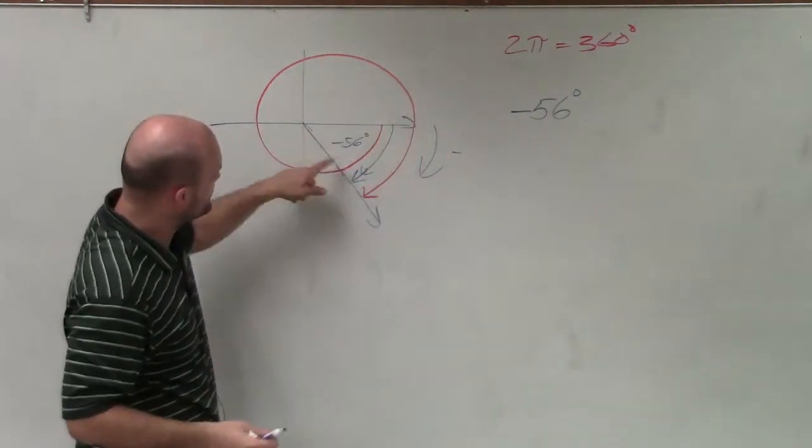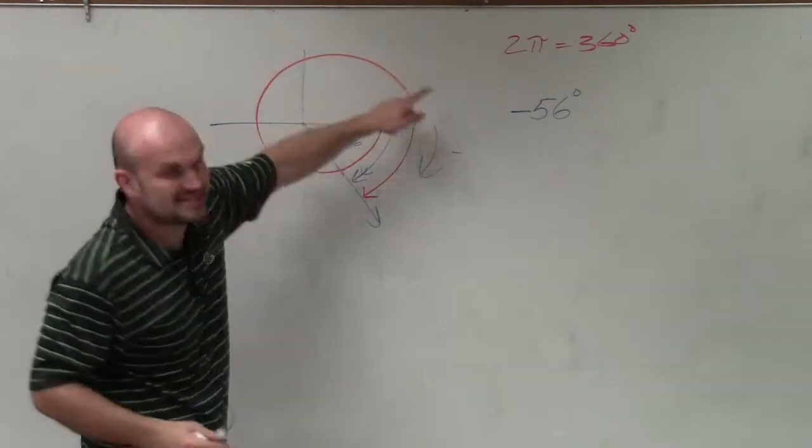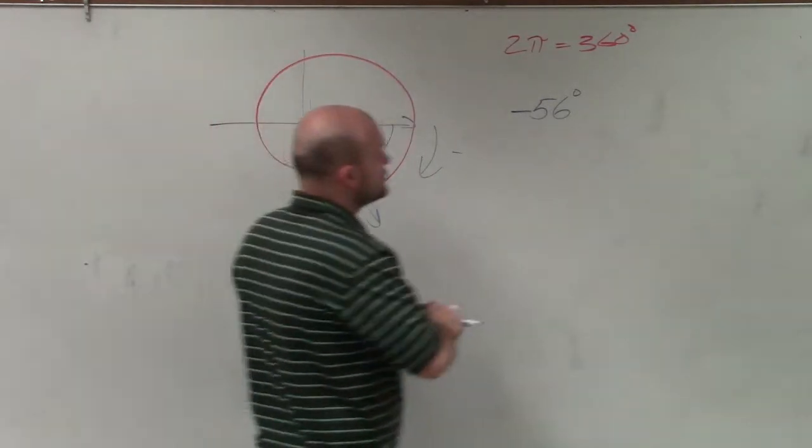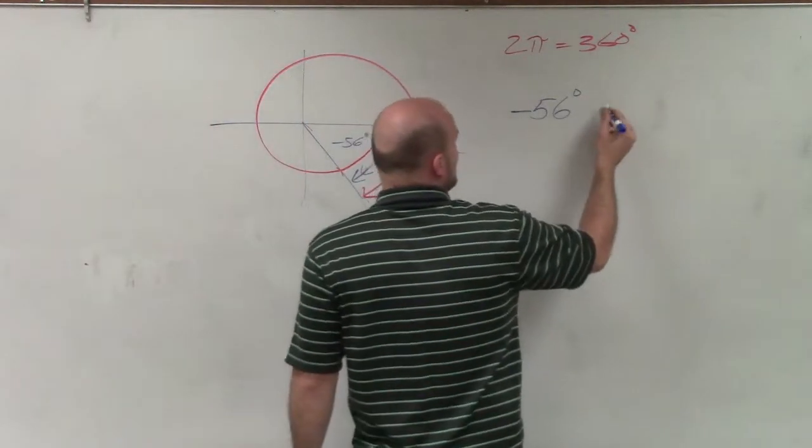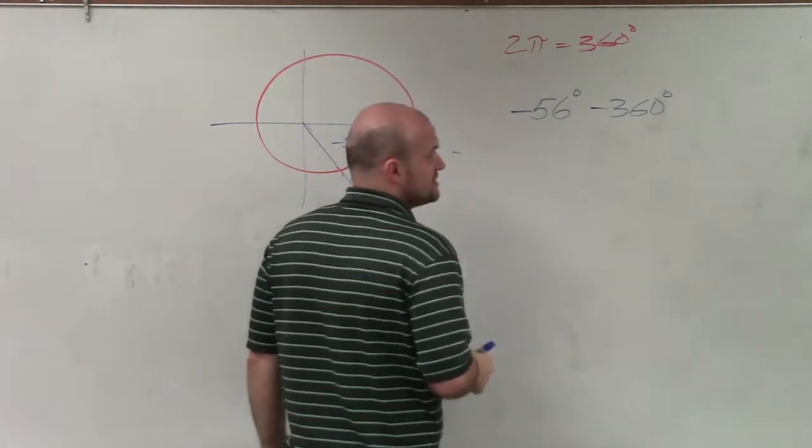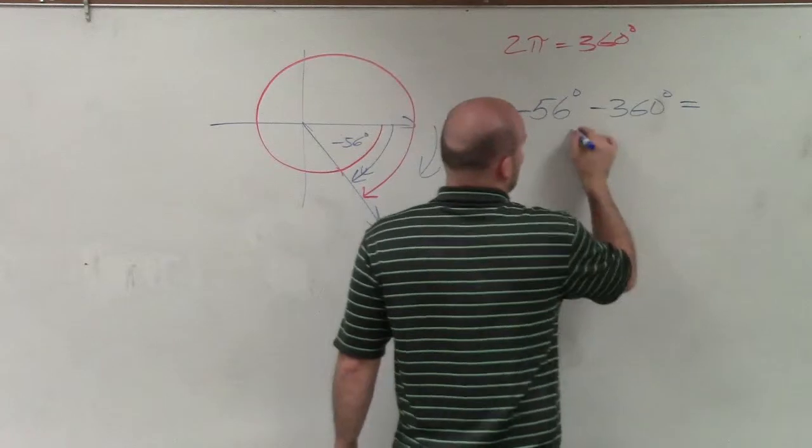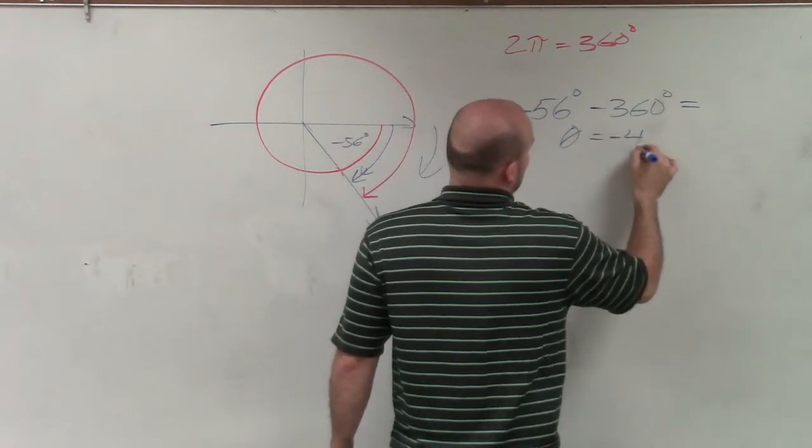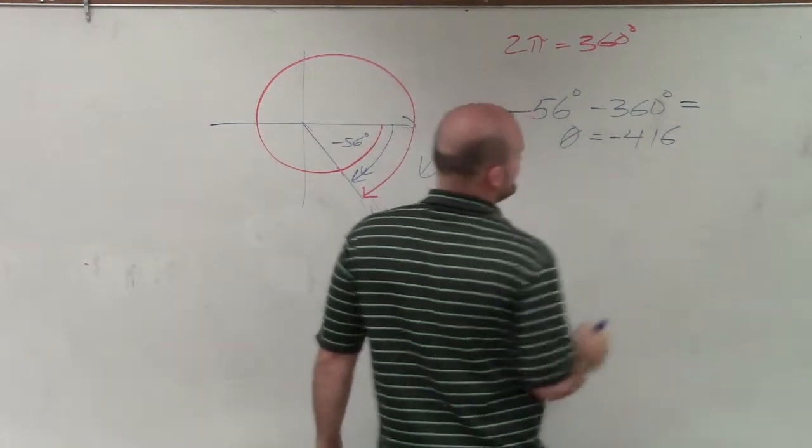Now, as I'm going in this direction, you can see that I'm going around, but it's still continuing in the negative direction. So to find my smallest negative coterminal angle, I'm going to subtract negative 360 degrees. And when I do that, I have θ equals negative 416 degrees.